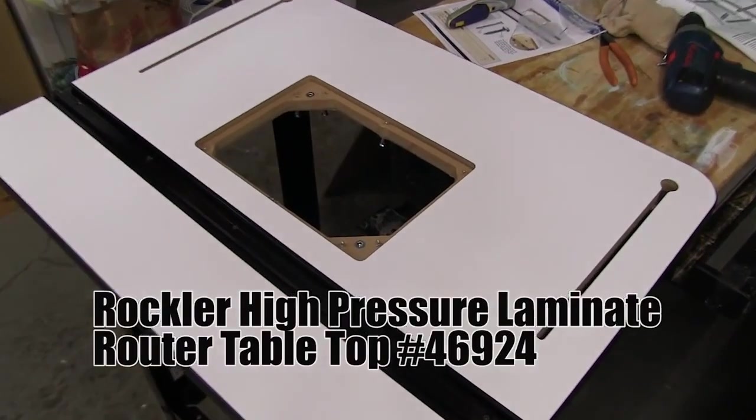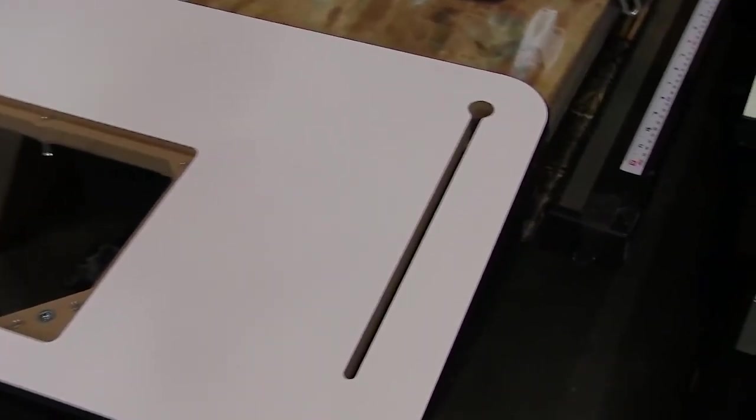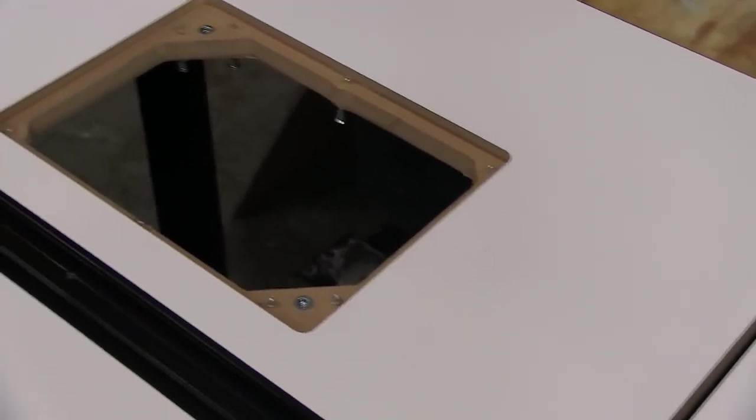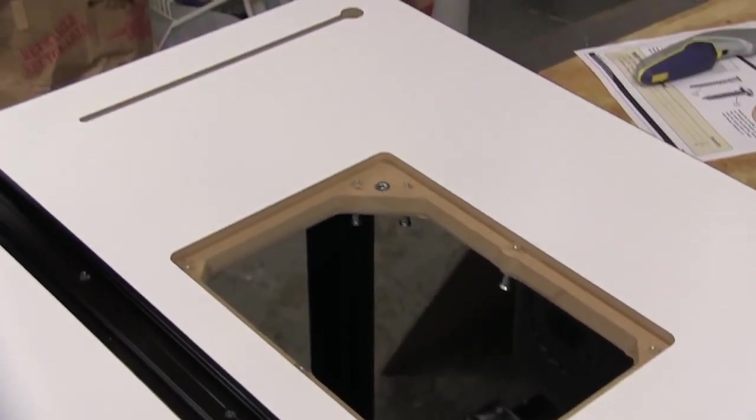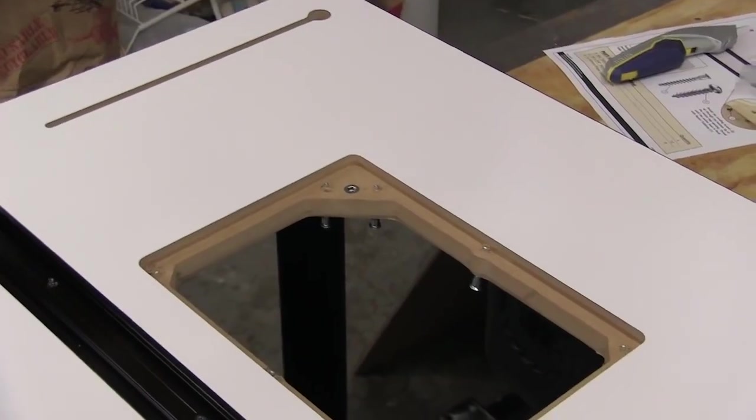The high pressure laminate table is an inch and an eighth thick and 24 by 32 inches long that gives you over five square feet of work area. And it comes fully machined so we know everything is very accurate.